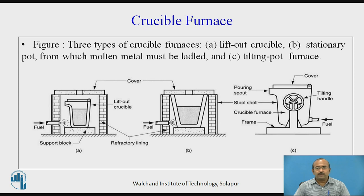Let us move further for crucible furnace. The following figures show three different types of crucible furnace: lift out crucible, stationary pot from which the molten metal must be ladled, and the tilting pot furnace. In subfigure A, the crucible furnace is supported with a support block and can be taken out from the heavy walled structure — directly lifting out the crucible and taking it to the nearby pouring station. That is why it is called the lift out crucible.